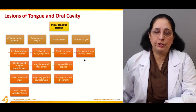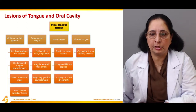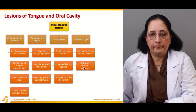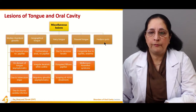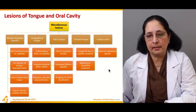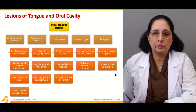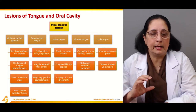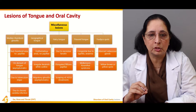Fissure tongue — fissures or cracking of the tongue — is a painful condition. It is congenital and may be associated with syphilis, anemia, and Melkersson-Rosenthal syndrome. Then we have Fordyce spots, which involve aberrant sebaceous glands. Yellow-brown or yellow spots are present in this condition.